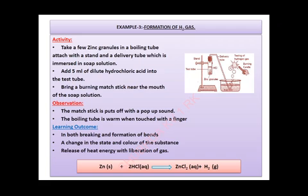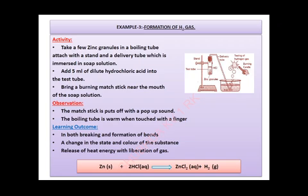The observations are: hydrogen gas is evolved, and when a burning matchstick is brought near the soap solution, it goes off with a pop sound. Additionally, the boiling tube starts getting warm, making this an example of an exothermic reaction. This activity demonstrates both the evolution of gas and a change in temperature — both indicators of a chemical reaction.